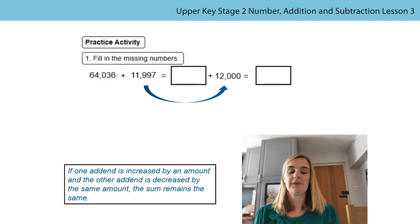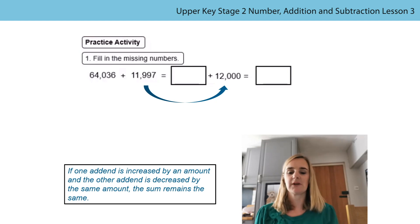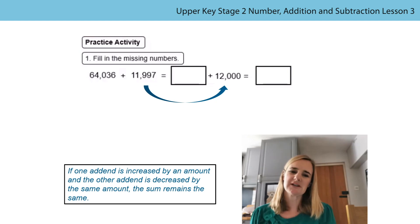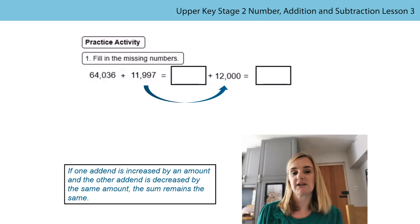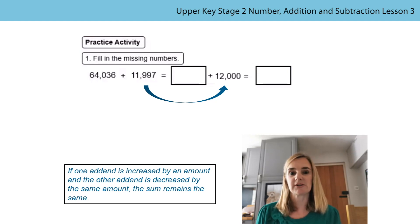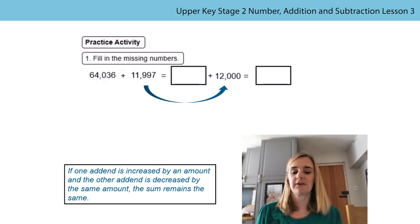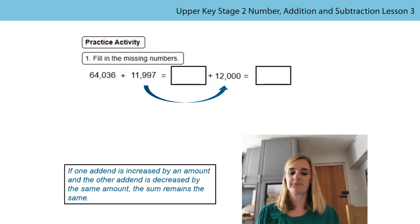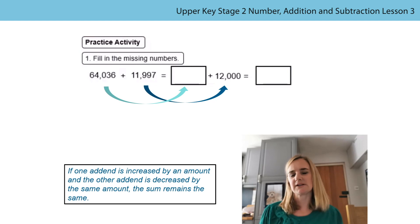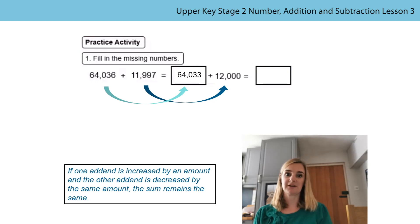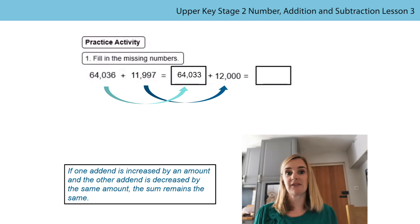Yesterday Mrs Moll left you with some questions to practice, and we're going to start today's lesson by reviewing those. In question one you were asked to fill in the missing numbers. I noticed a connection between 11,997 and 12,000. That's right - 11,997, if it's increased by three, will get us to 12,000. Now if one addend has been increased by three, the other addend has to be decreased by three, so our 64,036 becomes 64,033.